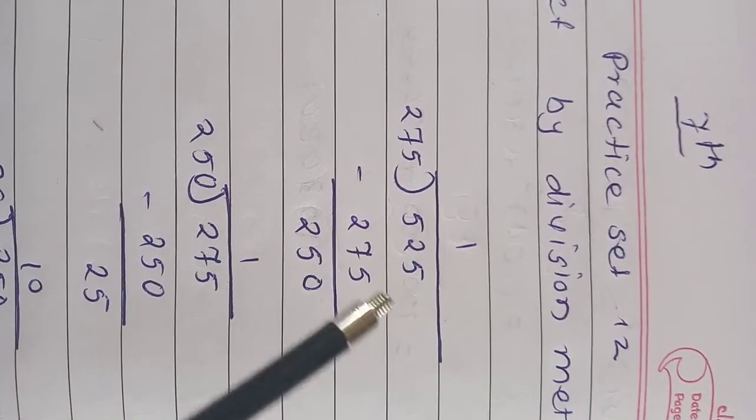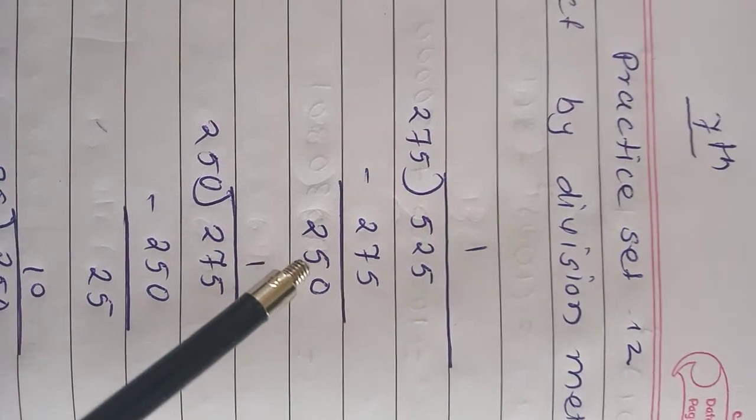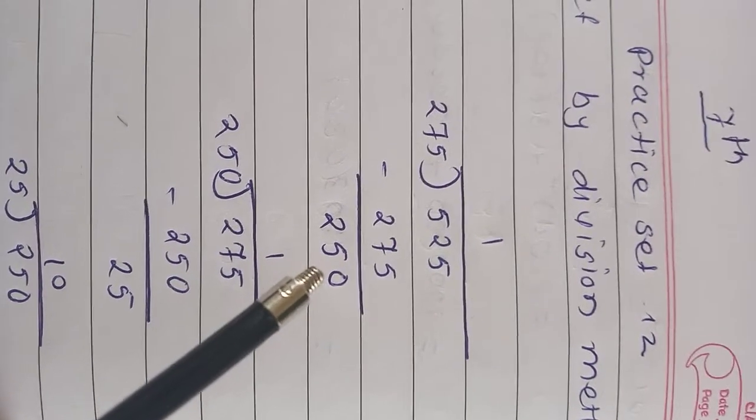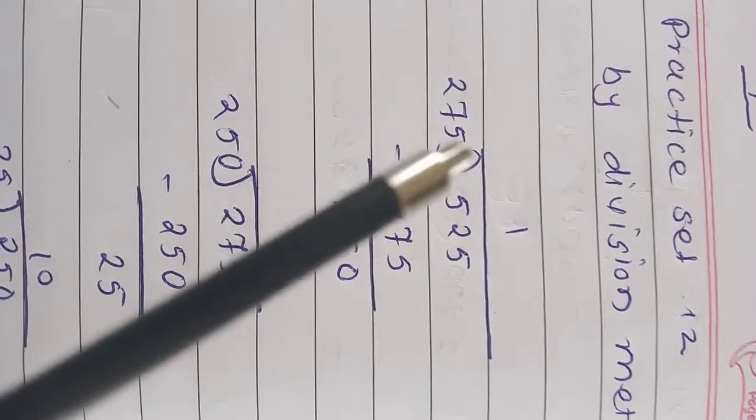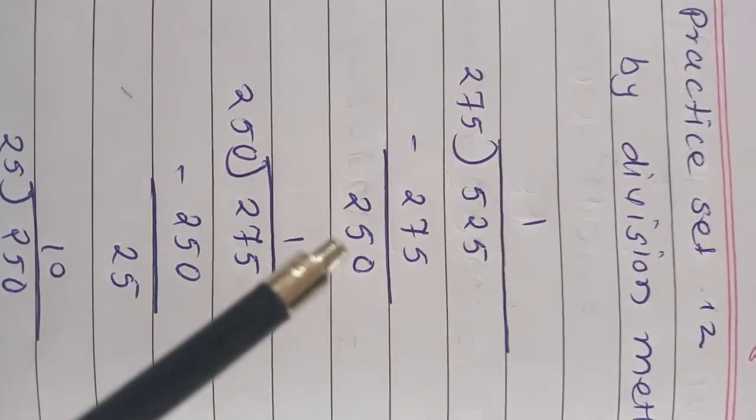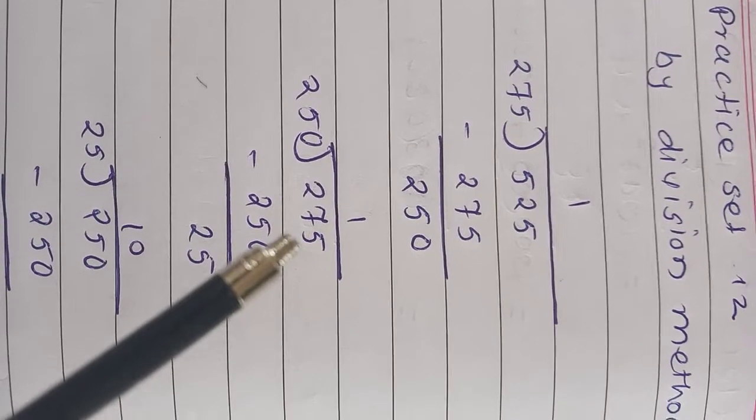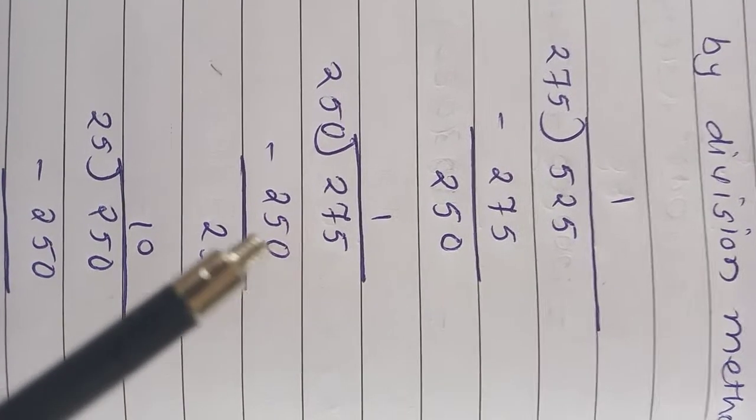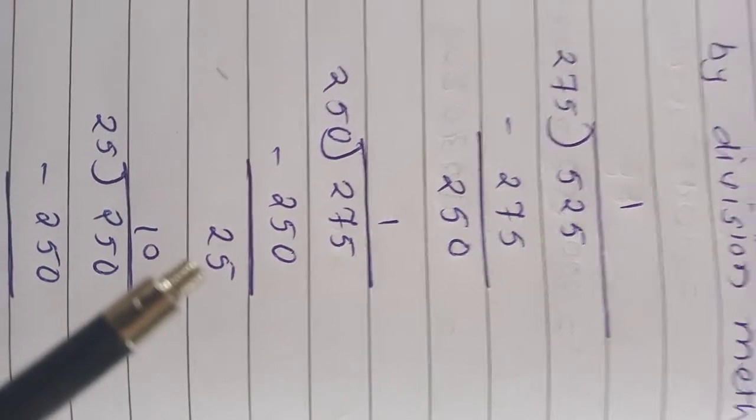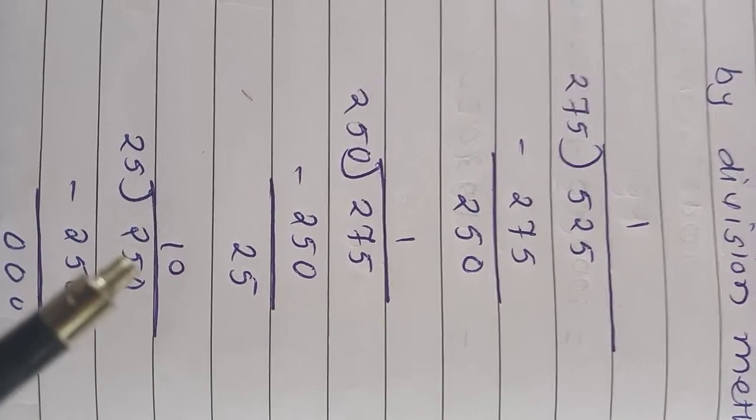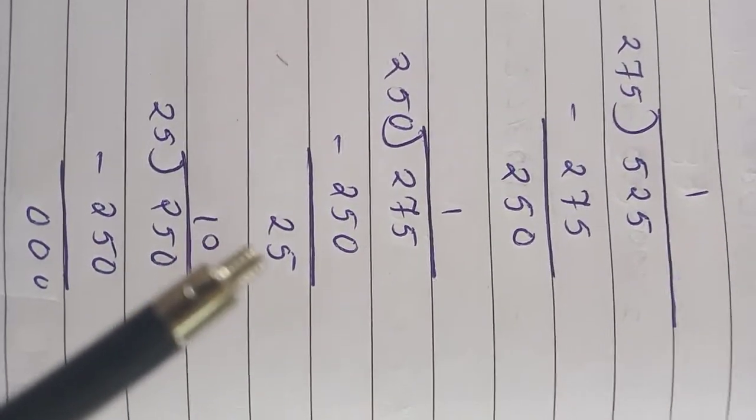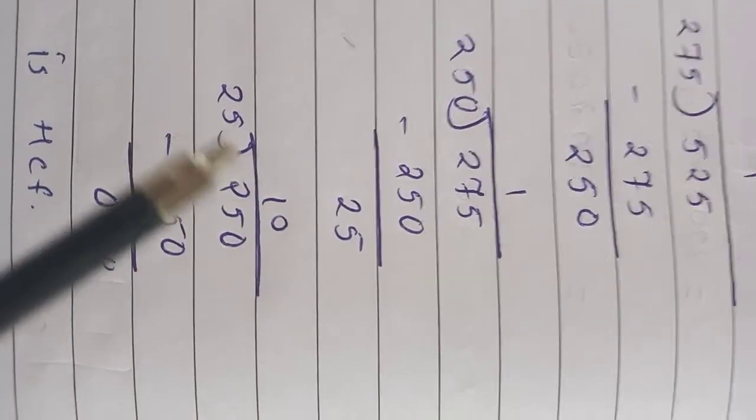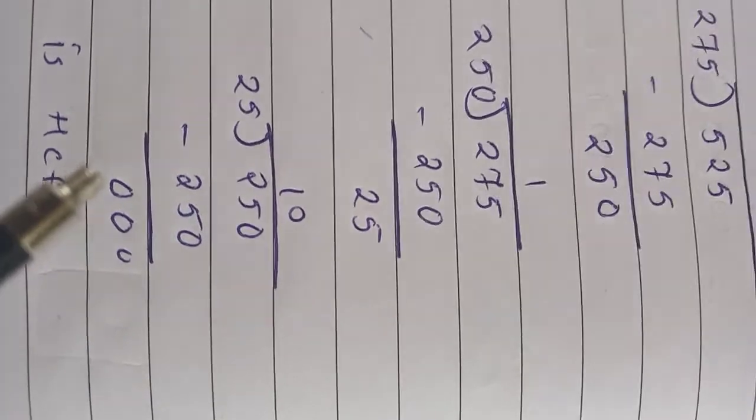So subtraction is 5 minus 5 is 0, 12 minus 7 is 5, 4 minus 2 is 2. So 250 is there. So we have to divide this 275 by this remainder 250. So 275 divided by 250. So 250 ones are 250. So 275 minus 250 is 25. Now we have to divide this 250 by 25.